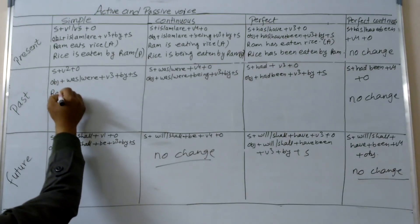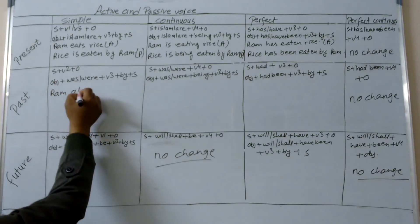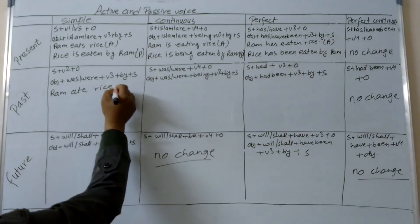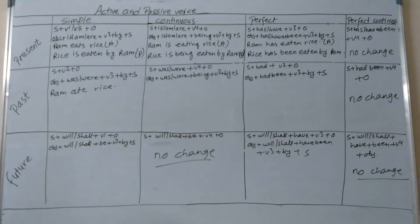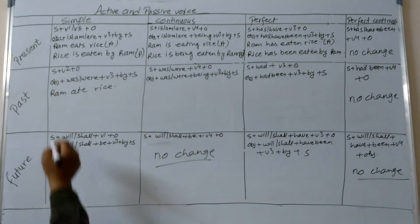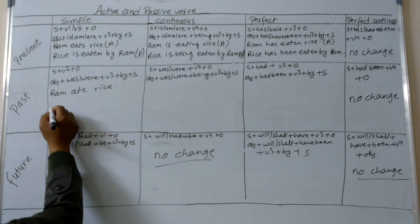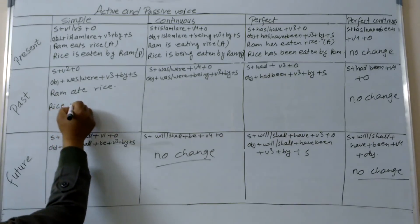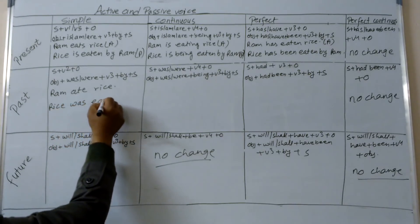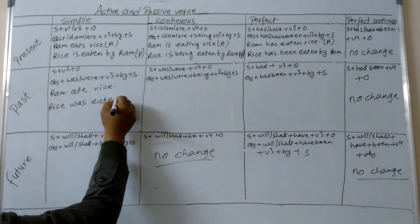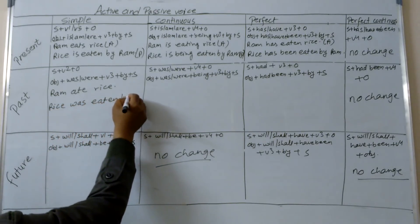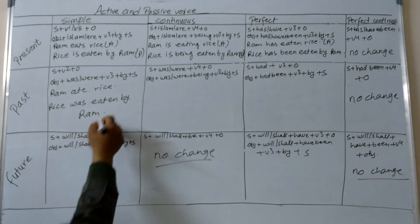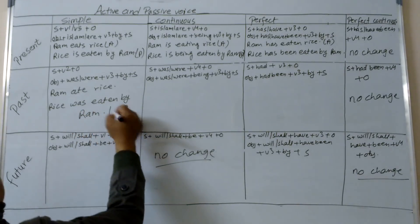Same sentence in past simple active voice: Ram ate rice. Now passive voice: rice was eaten by Ram. This is the passive voice.